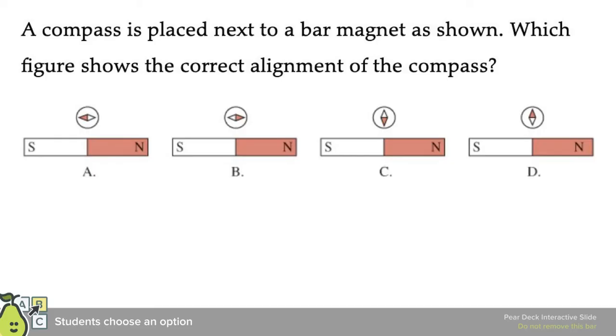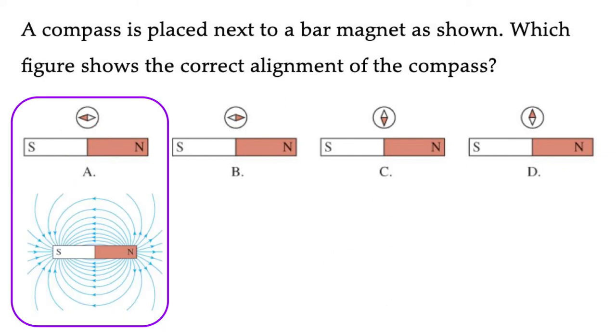All right. A compass is placed next to a bar magnet as shown. Which figure shows the correct alignment of the compass? Remember, again, for a bar magnet, the field, the dipole field looks something like, leaves the North Pole, which I guess we should mark like this, and heads into the South Pole. So we should look for, and the direction tangent tells us which way the North would point. So it looks pretty clearly the North Pole would point opposite and along it would point like that. And there we are.